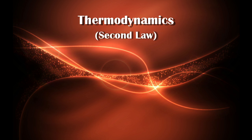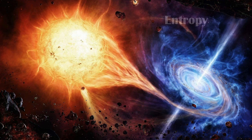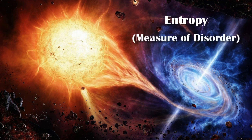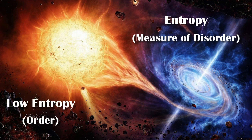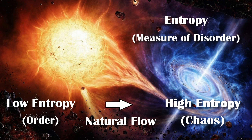The second law of thermodynamics states that the total entropy of an isolated system cannot decrease over time. In simple terms, entropy is the measure of disorder within a system. A low-entropy system is more ordered, while a high-entropy system is more chaotic. In essence, what the second law states is that a system naturally grows more chaotic with time, and it requires work to bring back order.